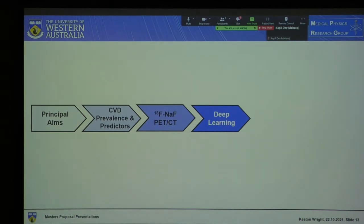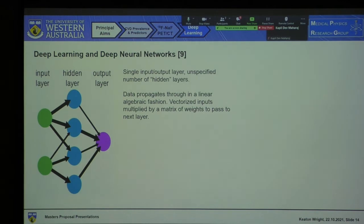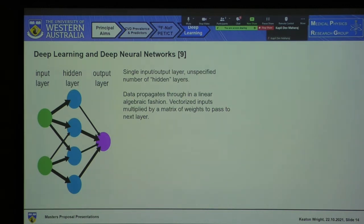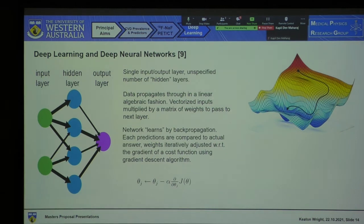So how does this all tie in with deep learning? I'll give a quick introduction into deep learning architectures, starting with the most basic one, which consists of three components: an input layer, an output layer, and an unspecified number of hidden layers. Data propagates through these in a linear algebraic fashion — inputs are vectorized and, to progress to the next layer, they're multiplied by a matrix of weights. The model improves by a process known as backpropagation, where predictions are run and the results are used to iteratively adjust the weights of each node using the gradient descent formula.